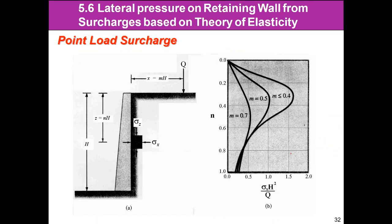The stress distribution from soil self-weight is standard. For a uniform surcharge, we treat it essentially the same as an additional soil layer. For other surcharge types, we must find the lateral pressure or stress increment. In this case — unlike soil mechanics where we find delta-sigma-v in the vertical direction — here we need the stress in the horizontal direction.